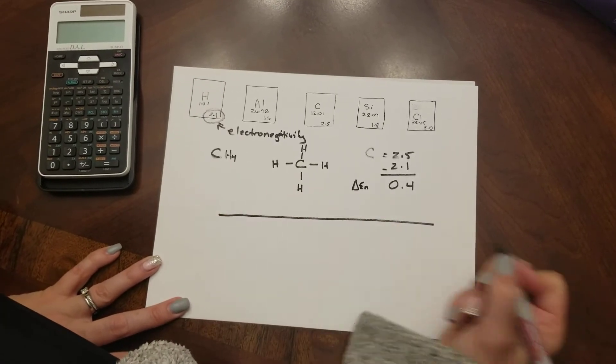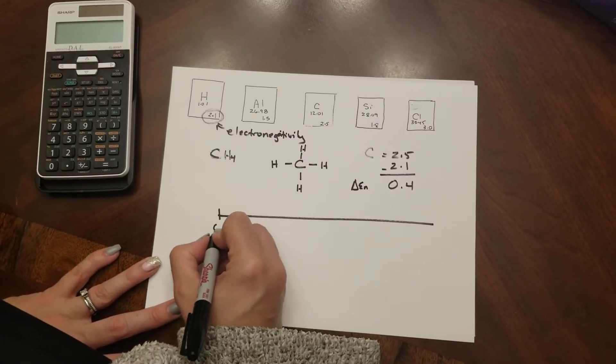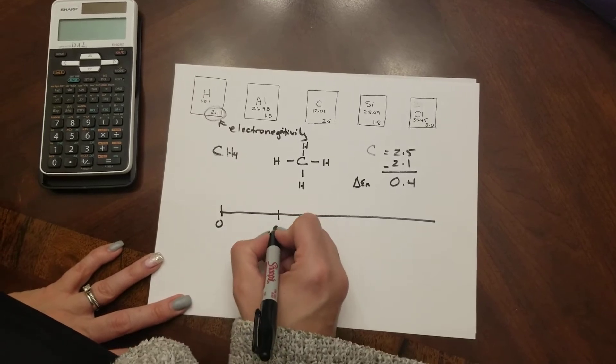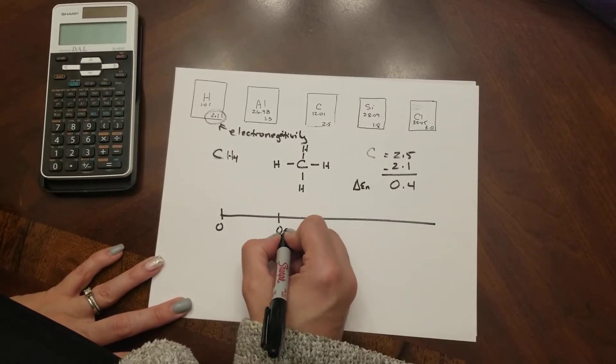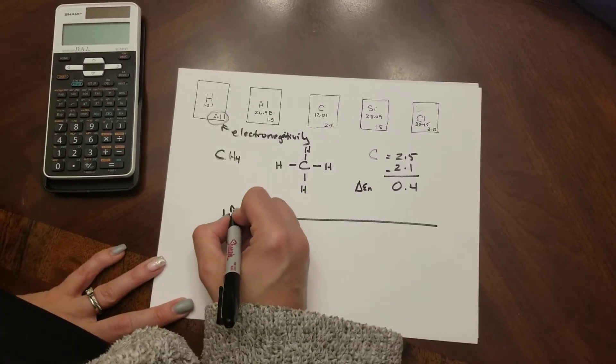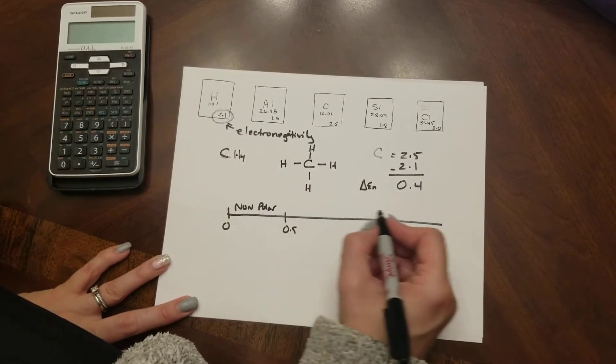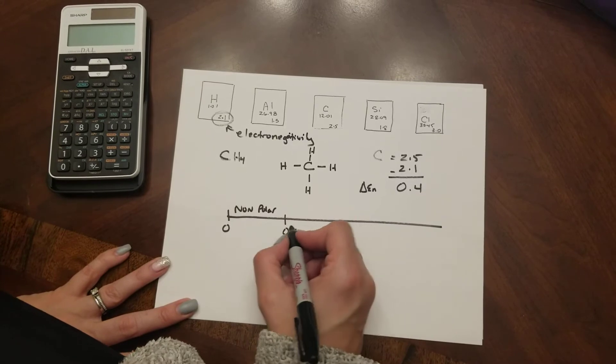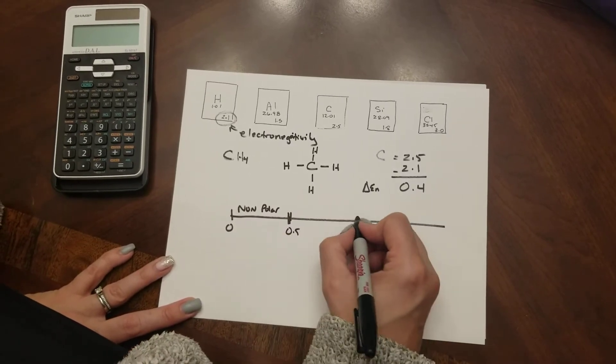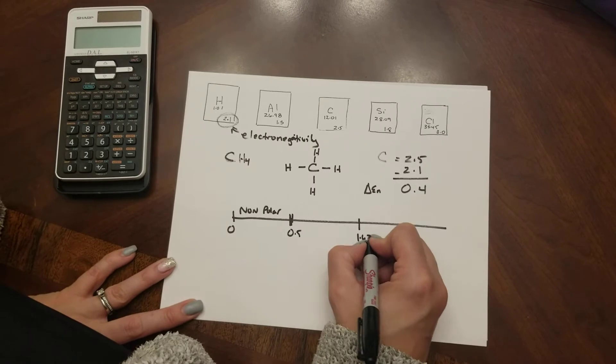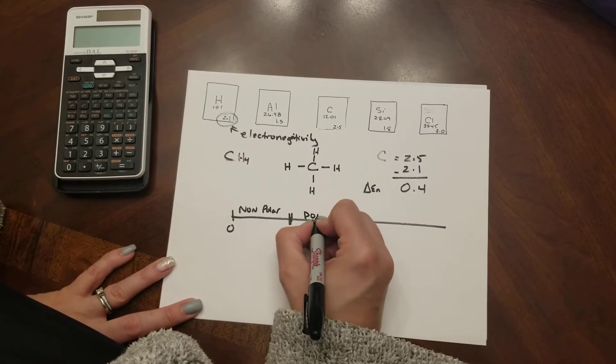So if we were to look at it on a number line our general rule is if we have a number that lands between zero up to but not including 0.5 we would call this non-polar. If the difference that we find in electronegativity is from 0.5 all the way up to but not including 1.67 we call this polar.